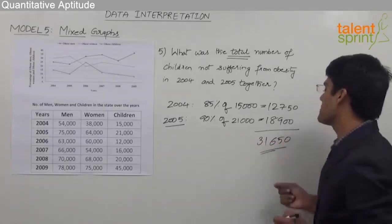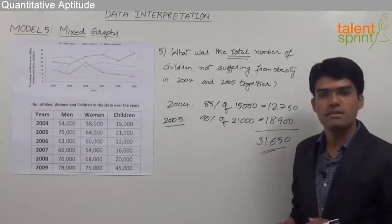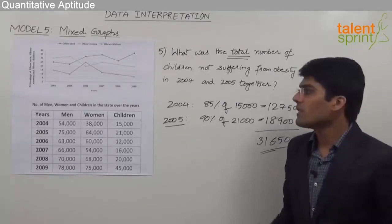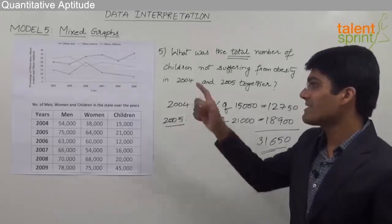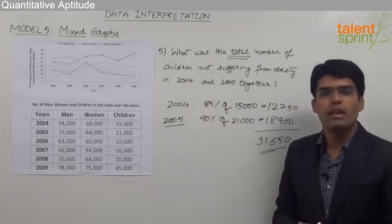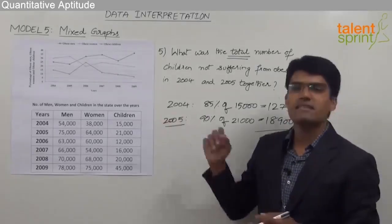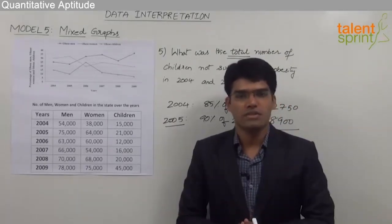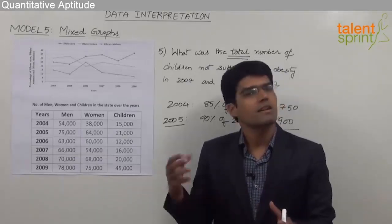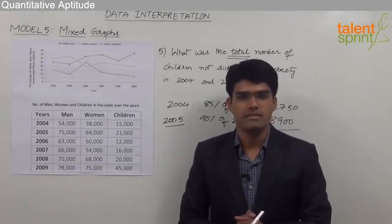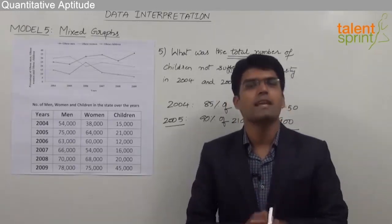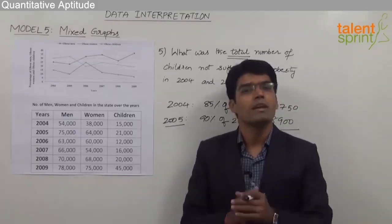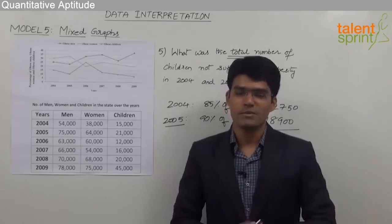So 31,650 children were not affected by obesity in 2004 and 2005 together. This is how we solve questions related to mixed graphs — understanding the data properly, picking up the right values, and calculating as fast as possible. With mixed graphs, we have finished the complete data interpretation part. Whether it's tables, line graphs, pie charts, or mixed graphs, it's all about calculations. Practice enough to make data interpretation a trump card in your bank exams.